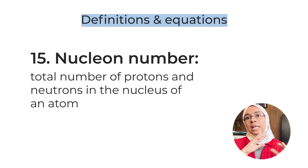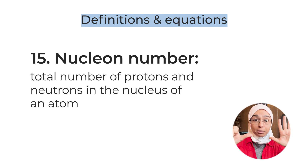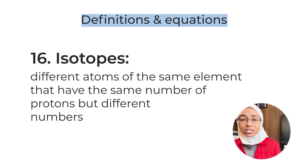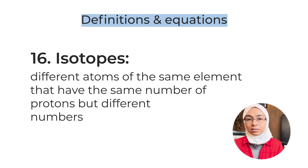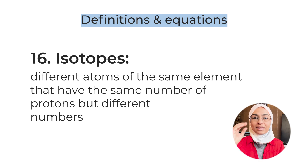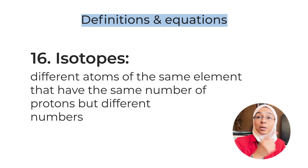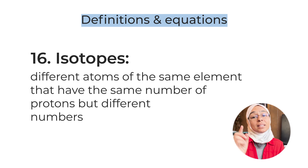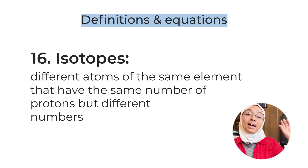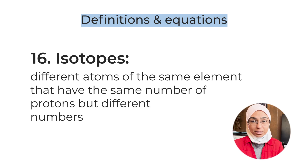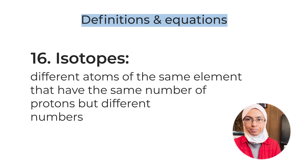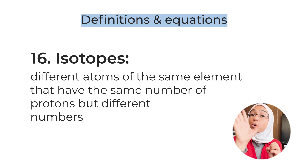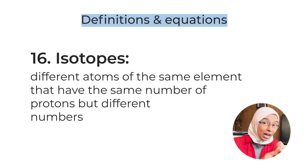Definition number sixteen: isotopes — a very common question, sometimes worth two marks. Isotopes are different atoms of the same element that have the same number of protons but different numbers of neutrons. You can also say they have the same atomic number but different mass number — you still get the marks. This question can appear as a written direct question or very commonly in multiple choice, so pay close attention.